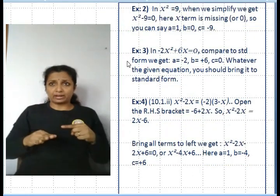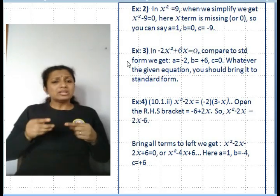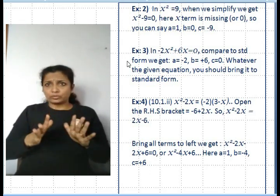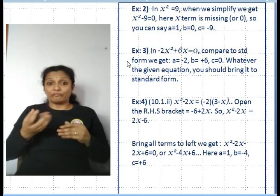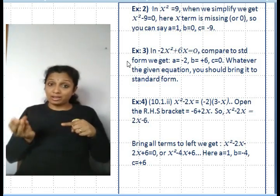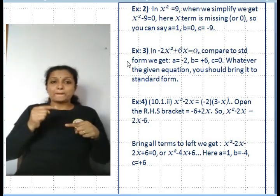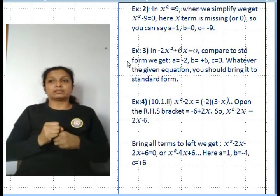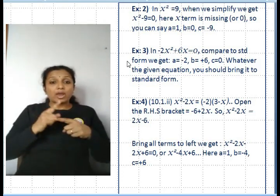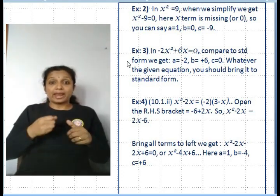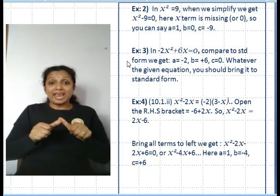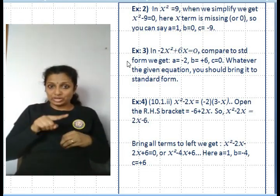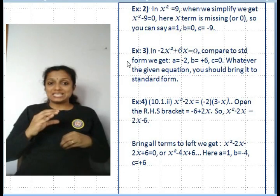Example 2: x² = 9. When we simplify, we get x² - 9 = 0. The x term is missing, so you can say a = 1, b = 0, c = -9.